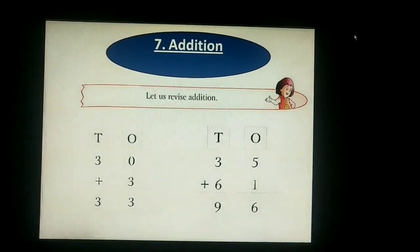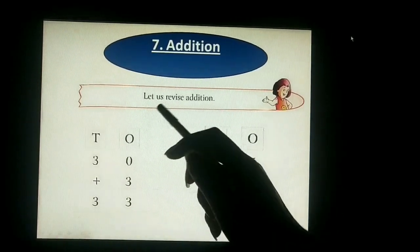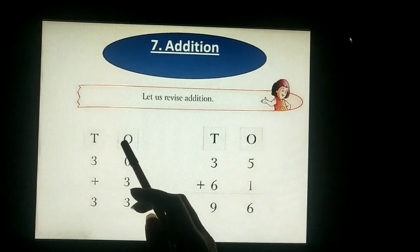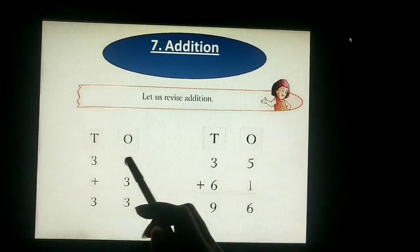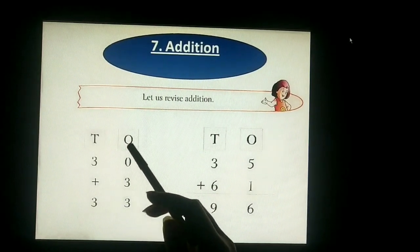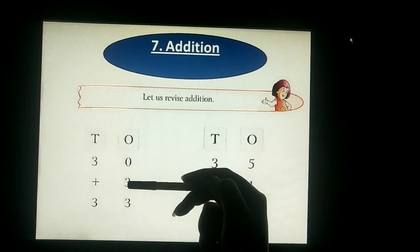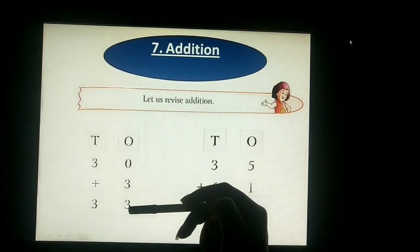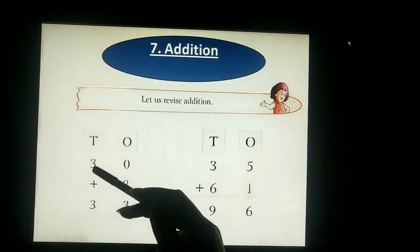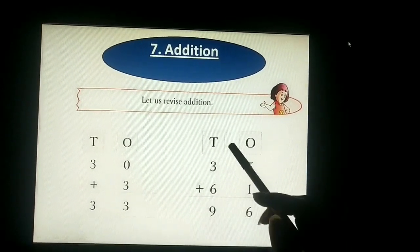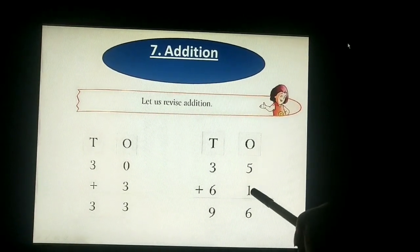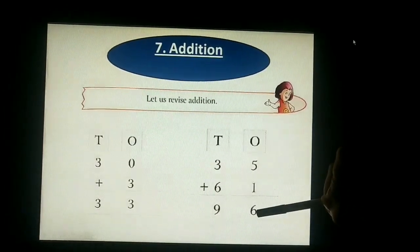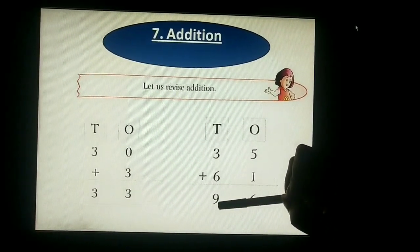So next topic is addition — addition means plus. Let us revise addition. We have some numbers given: O represents the ones place and T represents the tens place. So 30 plus 3 — first we add the ones place: 0 plus 3 equals 3. Then the tens place: we write 3. Next example: 35 plus 16 — ones place: 5 plus 1 is 6. Tens place: 3 plus 6 is equal to 9.